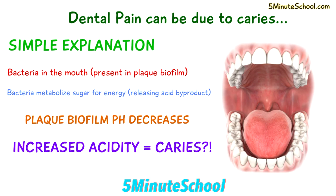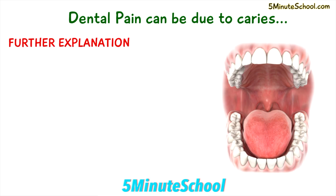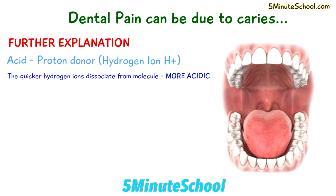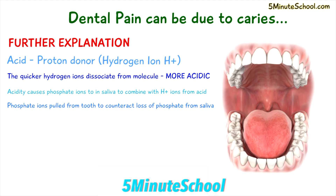That's a simple way to understand how caries work, but in reality it can get a little more complicated. Acidity is a measure of hydrogen ions, and the more hydrogen ions released, the more acidic the acid is in nature. When we have this acid layer on the tooth surface, phosphate ions in the saliva combine with these hydrogen ions from the acid. To balance the loss of these phosphate ions in the saliva, they're pulled out of the teeth and into the saliva. Because of this acidity, the tooth has lost phosphate ions in a process called demineralization.